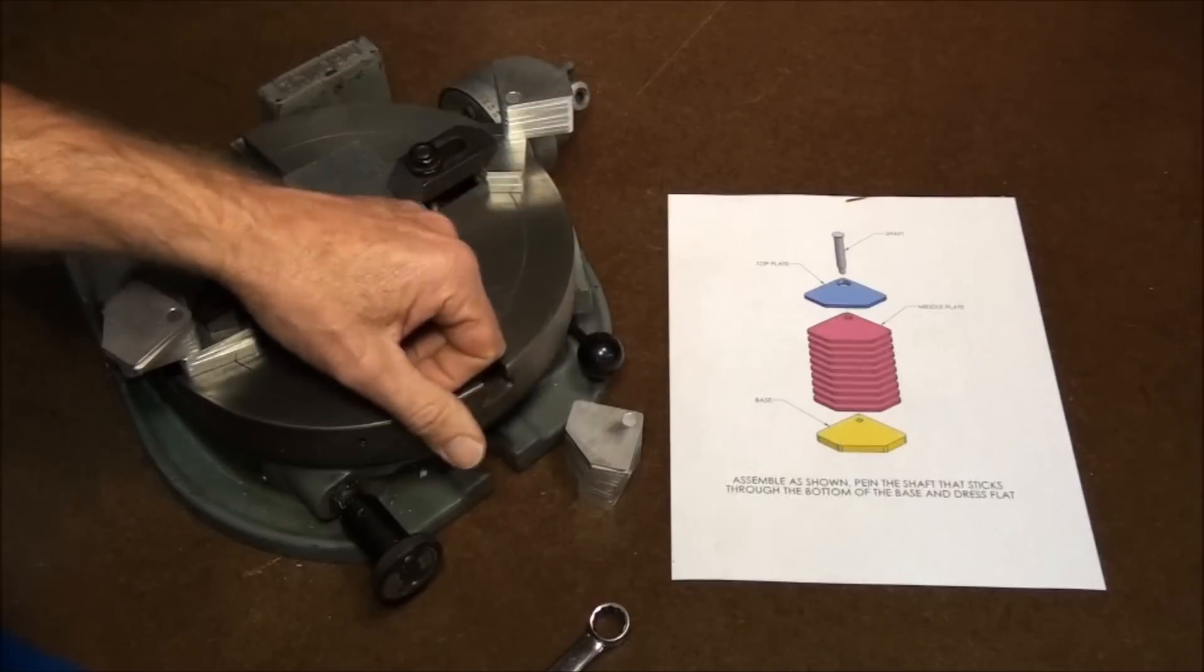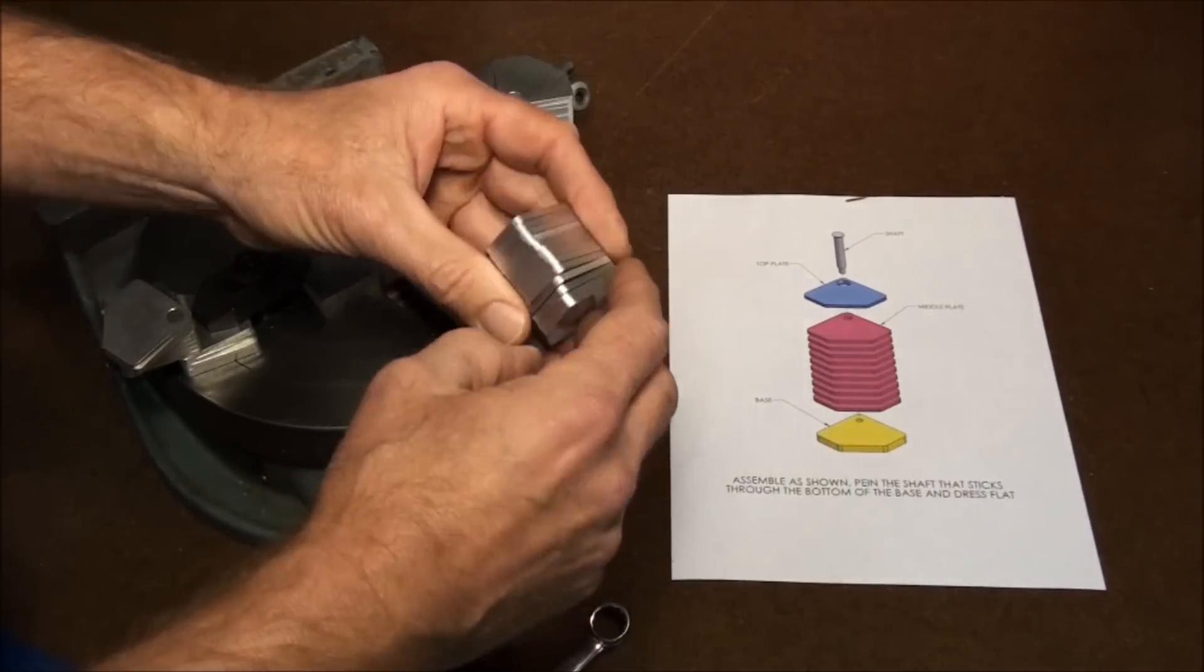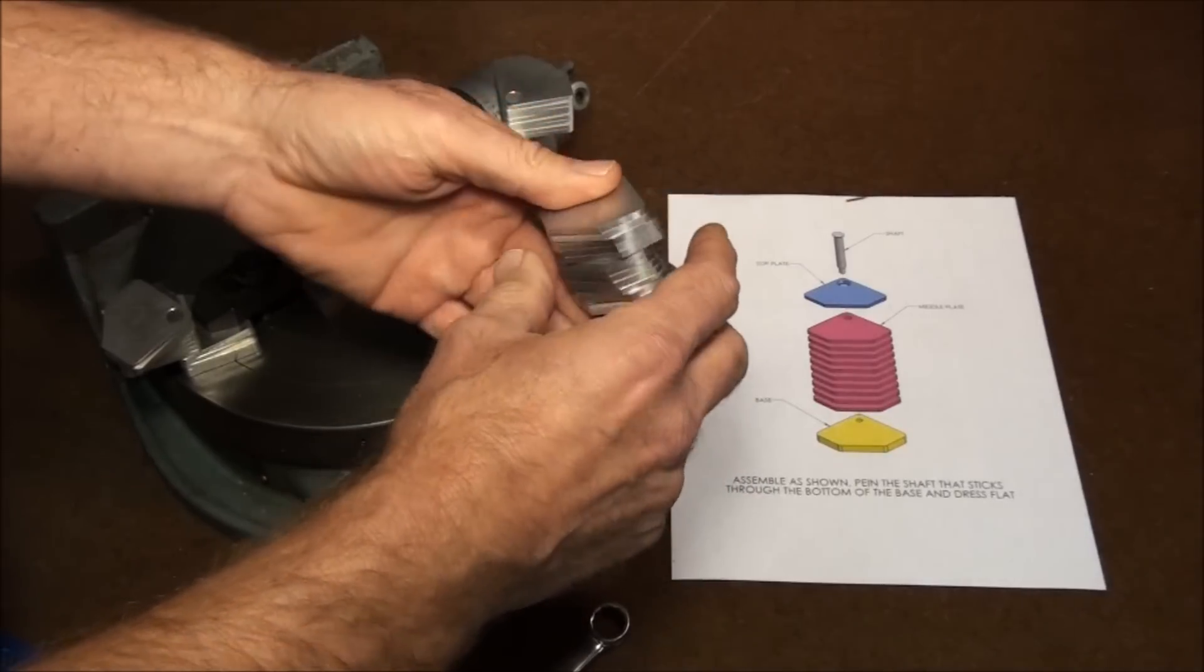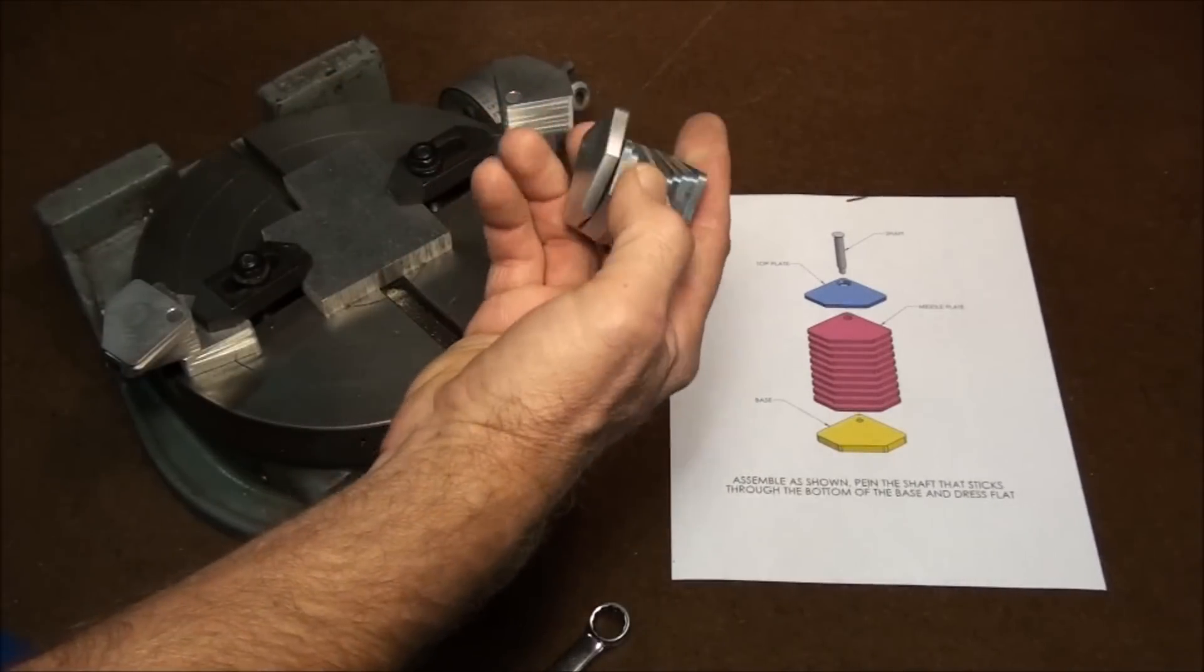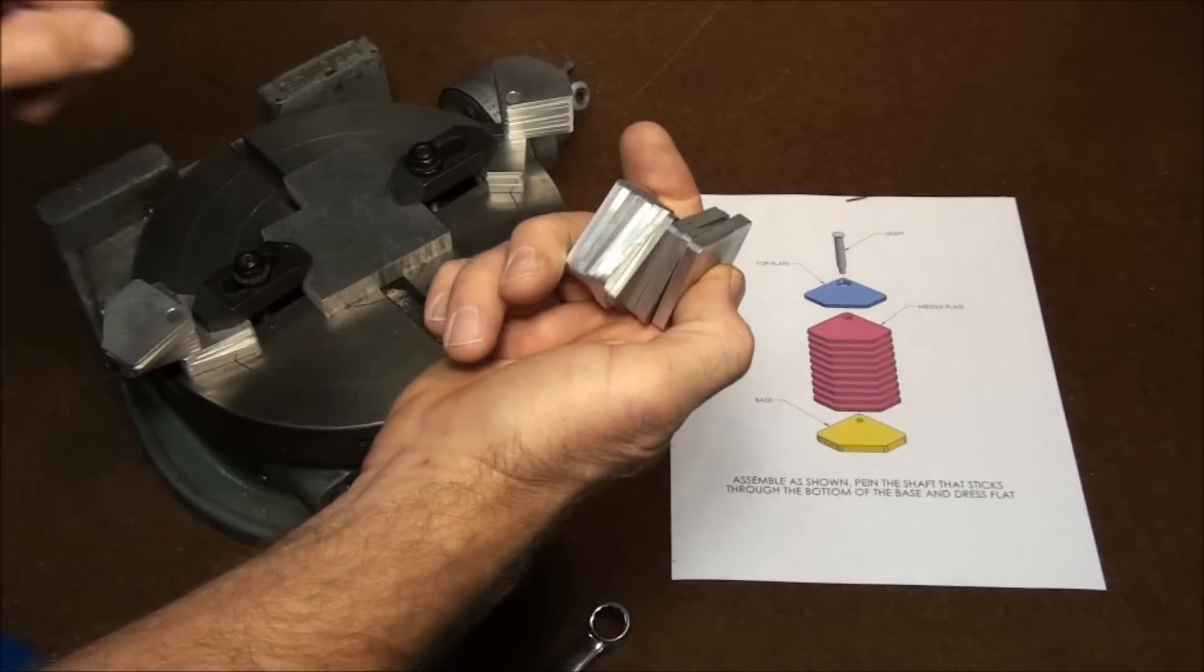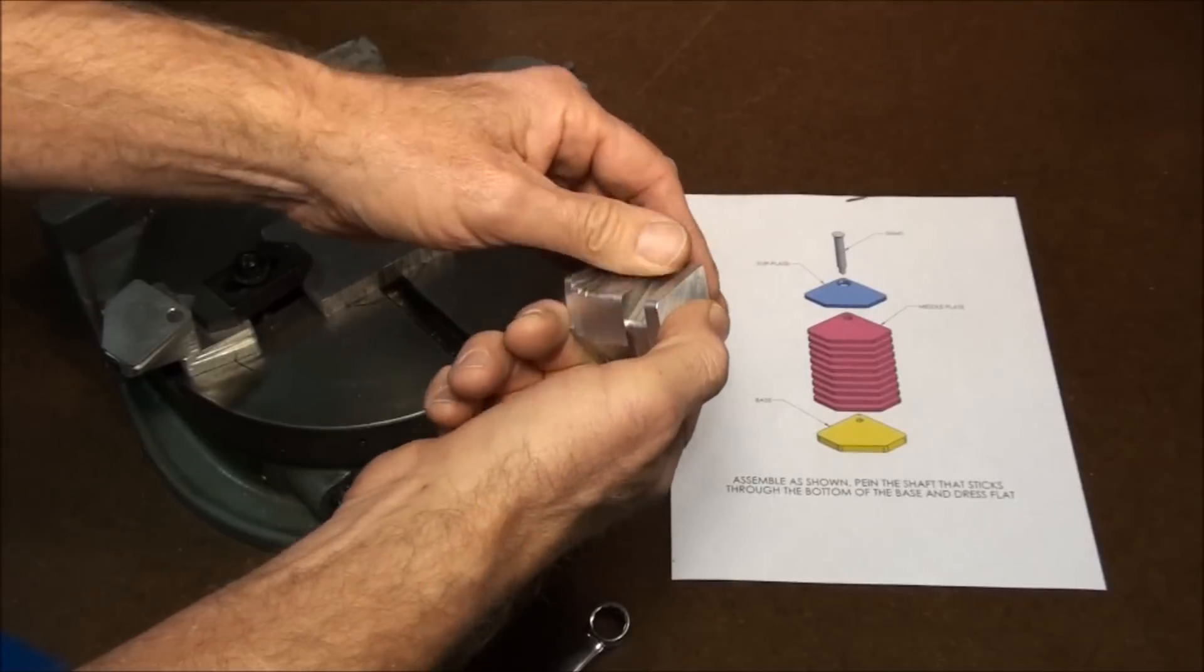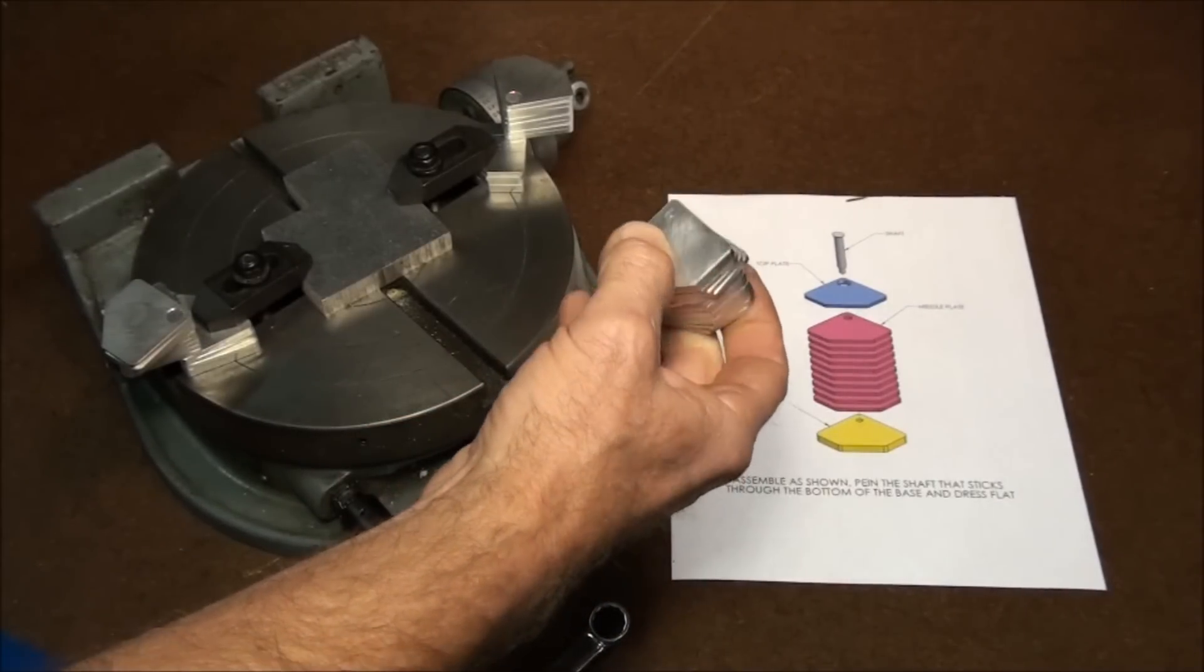There are lots of operations involved in this project. There's squaring up parts, there's milling an angled surface, there's sawing parts, milling corner radii, most of the corners have radii milled on them, drilling and countersinking.